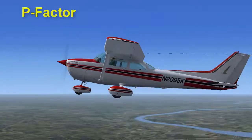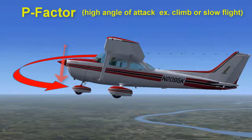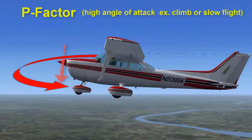P-factor also involves the propeller and occurs when an airplane is in a high angle of attack, such as when in a climb or slow flight. In these conditions, the blade moving up takes a smaller slice of air versus the descending blade, which takes a larger slice. This difference in thrust causes the airplane to yaw to the left.